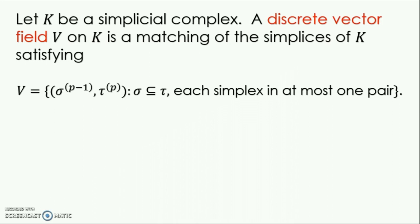In general, then, let K be a simplicial complex. What we will do is define something called a discrete vector field on K, which is a matching of the simplices of K, satisfying the property that each simplex is in at most one matched pair.